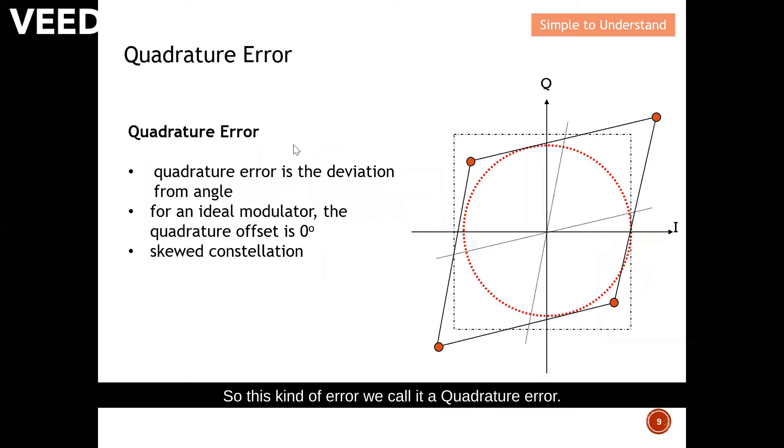Quadrature error is the deviation from angle. You saw it earlier on, there is some error from the angle, and because of this they actually create some error in the constellation diagram. For an ideal modulator, the quadrature error is zero degrees. As I illustrated earlier on, so this thing is supposed to be perfect at this point, but because of quadrature error instead of exactly at this point it actually shifts to here, for example. And with this they actually skew the constellation to one side. So this is what will happen if we have this quadrature error.